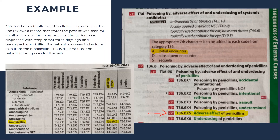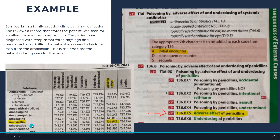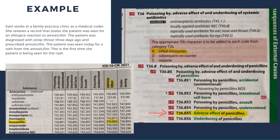Example: Sam works in a family practice clinic as a medical coder. She reviews a record stating the patient was seen for an allergic reaction to amoxicillin. The patient was diagnosed with strep throat three days ago and prescribed amoxicillin, and was seen today for a rash from the amoxicillin — this is the first time the patient is being seen for the rash. In the table of drugs, we look up amoxicillin, highlighted in yellow, and follow it over to the adverse effect column because the patient was taking this medication correctly.